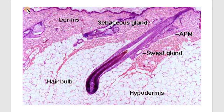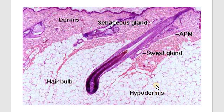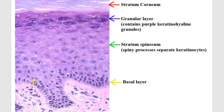On histology, we can see a very thin layer of epidermis covered by a very thin layer of keratin. Underneath it is the dermis, which contains the hair follicle, sebaceous oil gland, and sweat gland. Underneath the dermis is the hypodermis, which contains the fatty tissue.